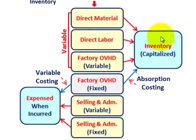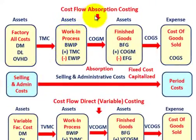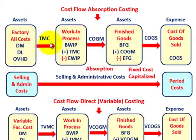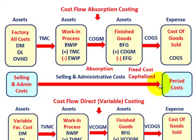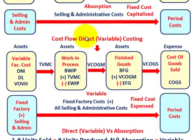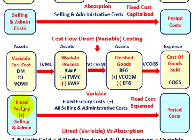Now let's look at the cost flow for each method. Factory costs move into work in process, then to finished goods, and then to cost of goods sold. We'll compare absorption and variable costing here. Selling and administrative costs are treated as period costs. Under variable costing, fixed factory overhead costs also go in as period costs along with selling and administration.